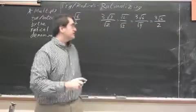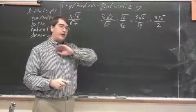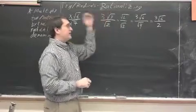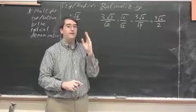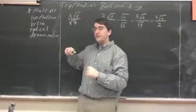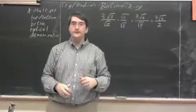3 radical 6 over 2. The radical in the denominator is gone now. This is the goal of rationalizing. Rationalizing means we don't have a radical in the denominator. So, any time you end up with a radical in the denominator, we want to get rid of it.